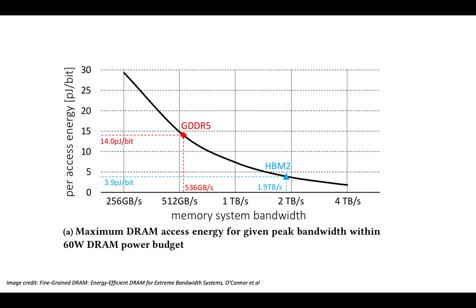For the energy cost of DRAM — there are multiple numbers on this slide, but I'll summarize in a second. This is a chart taken from 'Fine Grained DRAM: Energy Efficient DRAM for Extreme Bandwidth Systems.' It shows the maximum DRAM access energy for a given peak bandwidth within a 60-watt DRAM power budget — chosen because that's a typical DRAM power budget for a 300-watt GPU. The x-axis shows memory system bandwidth from 256 gigabytes per second to 4 terabytes per second, and the y-axis shows access energy in picojoules per bit for different DRAM technologies.